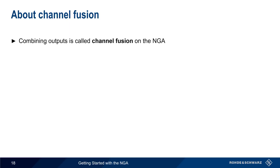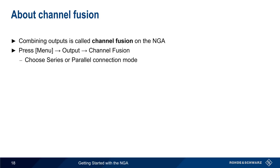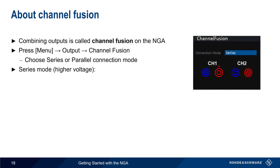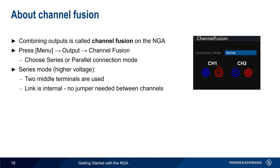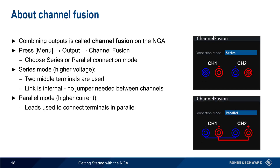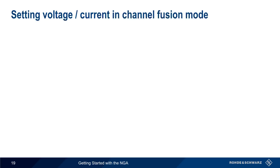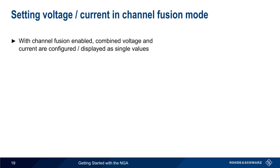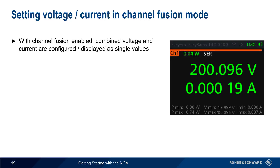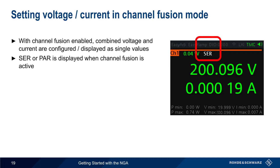On the NGA, combining outputs is called channel fusion. Channel fusion is enabled by pressing the menu hard key, then selecting output channel fusion. The two modes of channel fusion are series and parallel. In series mode, which is used to produce higher voltages, the two middle terminals are used for the combined voltage output. The link between these channels is made internally, so no jumper between the channels is necessary. When using parallel mode to produce higher current, the leads must be manually connected to the terminals in parallel. Once channel fusion is enabled, the combined voltage and current is displayed and configured as single values on the NGA. In this example, two channels have been combined in series to increase the maximum output voltage to 200 volts, and series is now displayed to show that channel fusion is active.